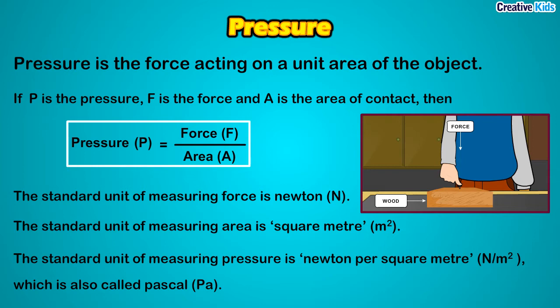Force per unit area is nothing but pressure. Greater is the force, greater is the pressure. Greater is the area of contact, lesser is the pressure. So pressure is the force acting on a unit area of the object — force per unit area is pressure.